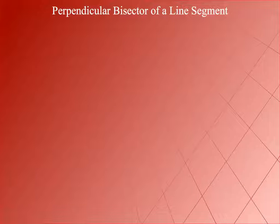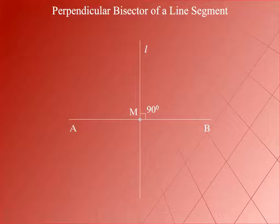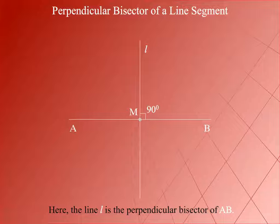Perpendicular bisector of a line segment: Let AB be a line segment and M be its midpoint. A line passing through M, the midpoint, and perpendicular to the line segment AB is called the perpendicular bisector of AB. Here, the line L is the perpendicular bisector of AB.